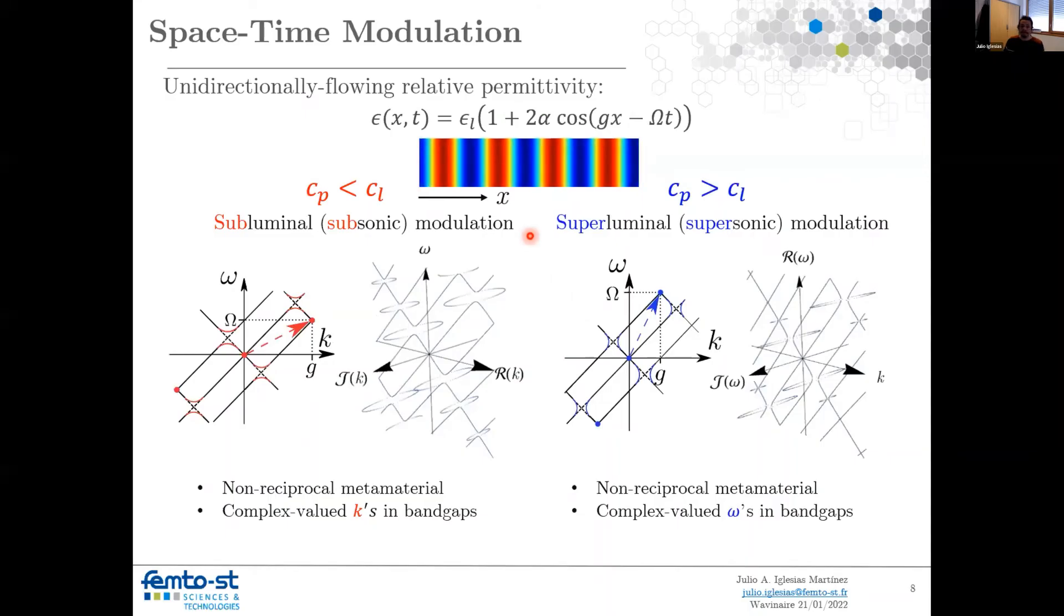Now let's put the two together and we have the space-time modulation. And we immediately have two cases. The first case is a subluminal case. That is when the velocity of modulation is smaller than the velocity of the wave in the media.